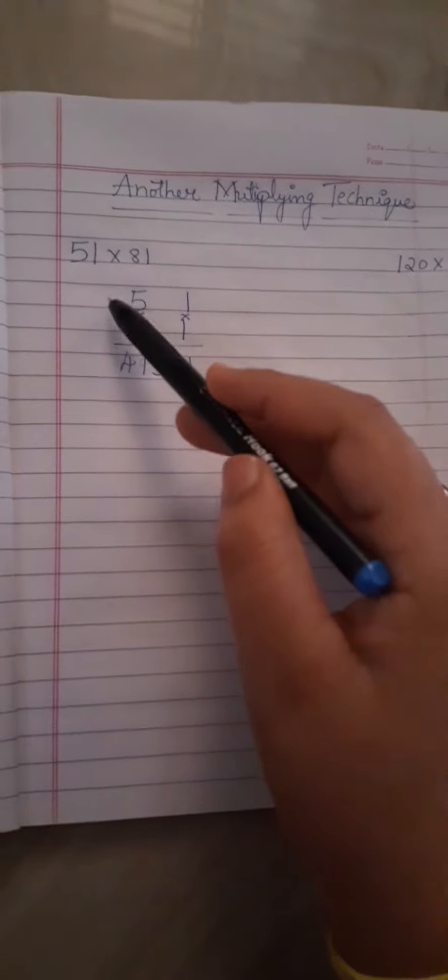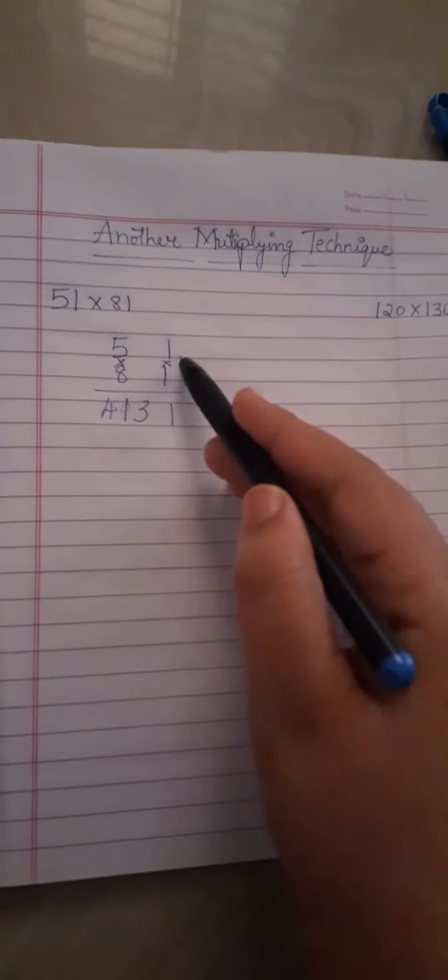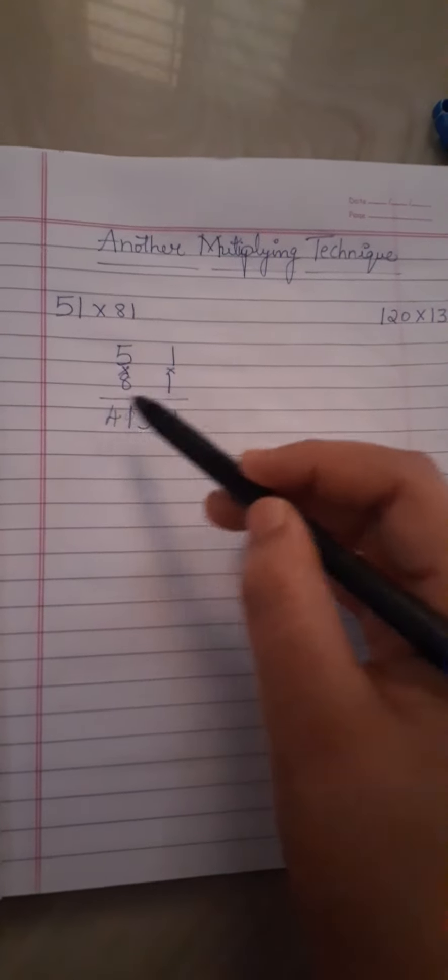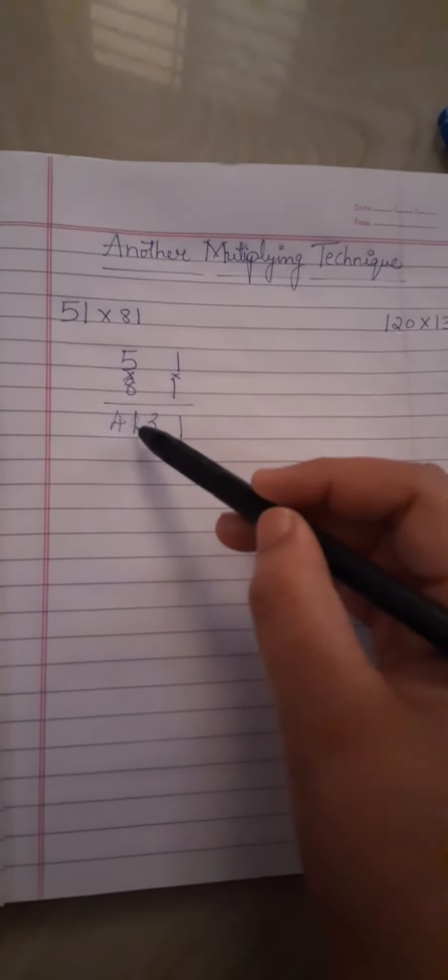Hello guys, in the earlier video we have discussed this two numbers multiplication, right? That is 51 multiplied by 81. Just 1 into 1 is 1, and 8 is 8. 5 is 40, so next afterwards 8 plus 5 is 13.